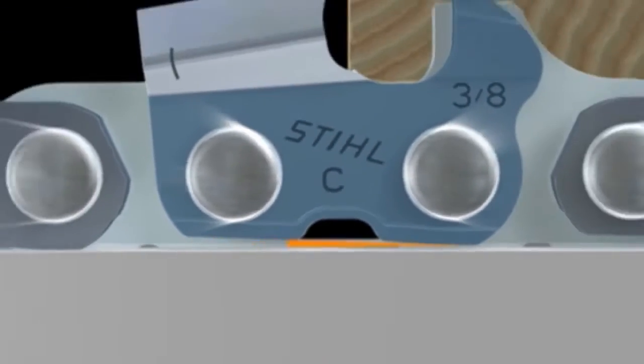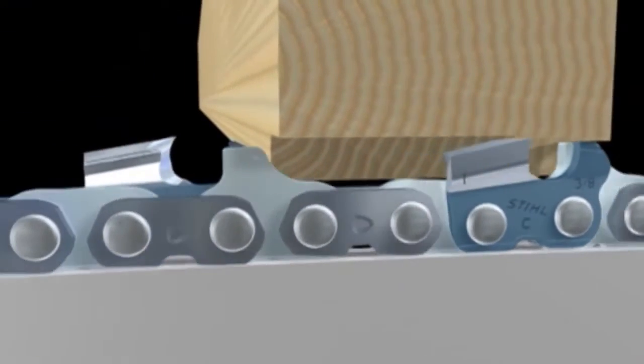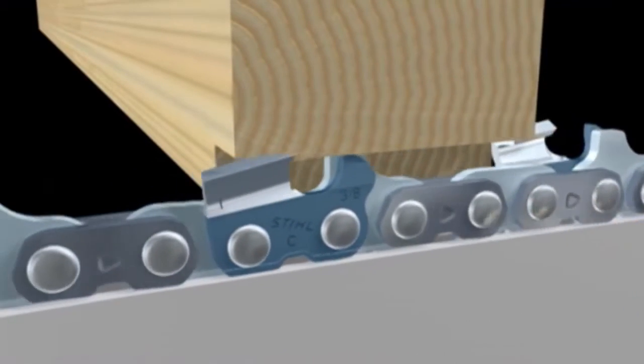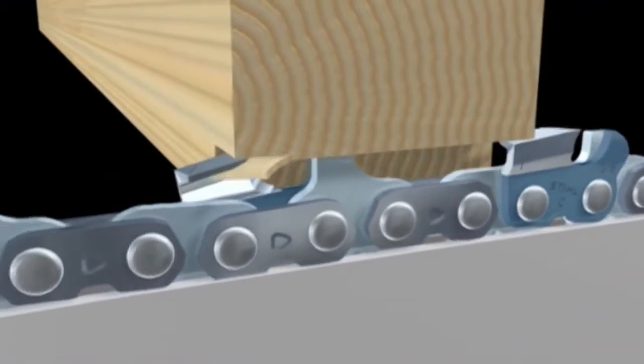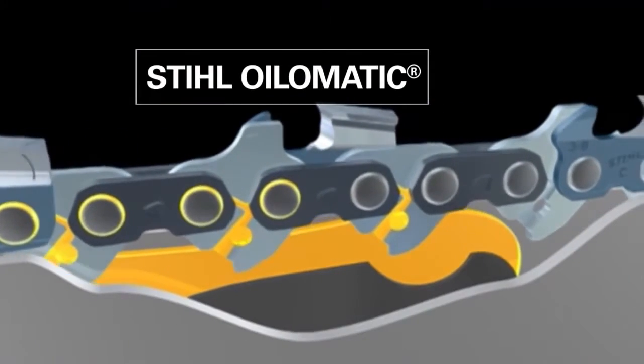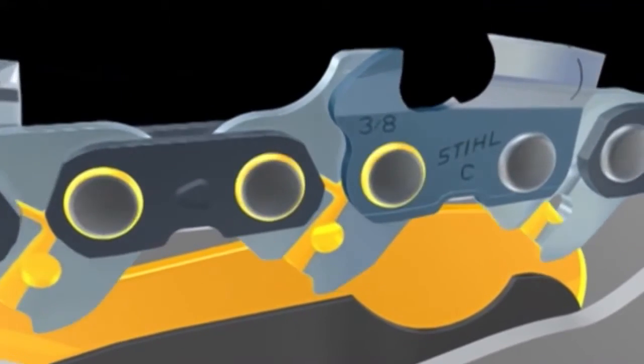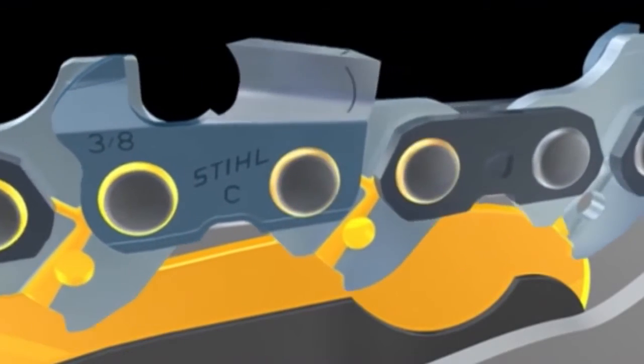Besides having the saw chain in perfect condition, one essential requirement is optimum chain lubrication. The STIHL Oilomatic system solves this problem. The lubricant flows up along the oil channels in the drive links and fills the oil reservoir before reaching the rivets and treads on the saw chain.